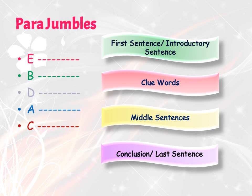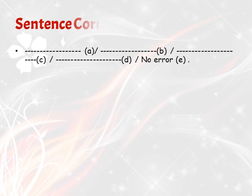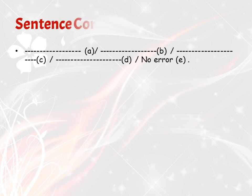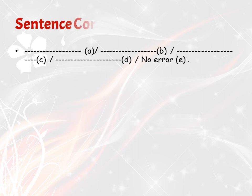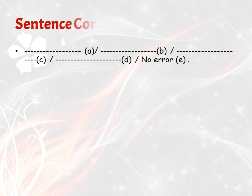Stay tuned with my channel for more updates. The next one is sentence correction. Here a sentence is divided into parts A, B, C, and D. If you feel there is no error in the sentence, you can mark E as your answer. If the error is in part A, then A would be your answer; if in B, then B; if in C, then C; and if in D, then D.